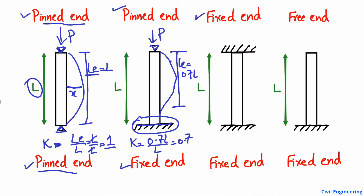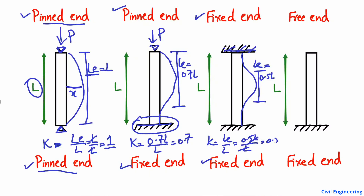The next case is the fixed-fixed column, in which both ends of the column are fixed. In this case, the deformation or buckling of the column will look such that only half of the column is buckled. So the effective length equals 0.5 times L. Therefore K equals 0.5L divided by L, which equals 0.5.